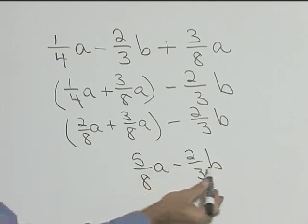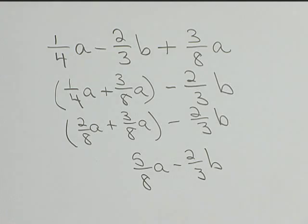And we can't combine these because there's two different variables on them. So the solution to this will be 5 eighths A minus 2 thirds B.